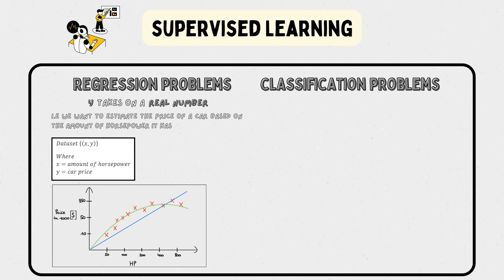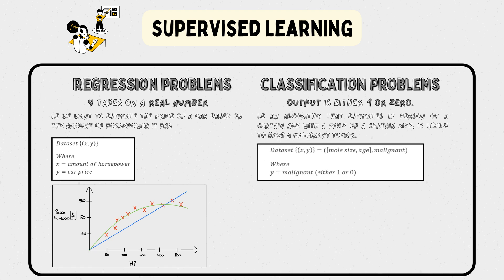On the other hand, we also have classification problems. These are problems where the output is either 1 or 0. For example, you can make an algorithm that estimates if a person of a certain age with a mole of a certain size is likely to have a malignant tumor. Let's say you provide a data set like this, where malignant can be either 1 or 0. In a 2D representation, this might look like this.